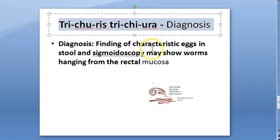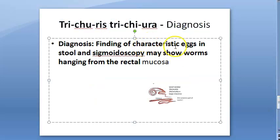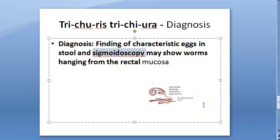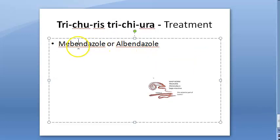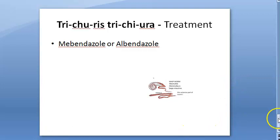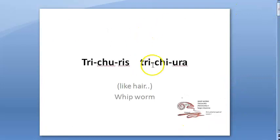For diagnosis, you will find these eggs in the stool. If you do sigmoidoscopy — going through the sigmoid colon — you will see worms hanging from the rectal mucosa. Treatment uses standard anti-helminthic drugs like mebendazole and albendazole.